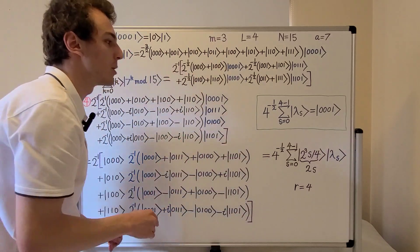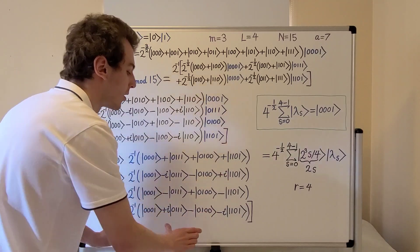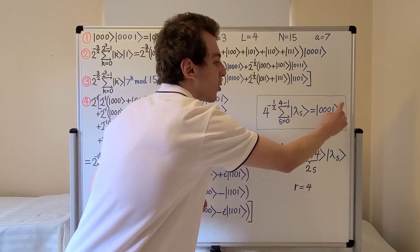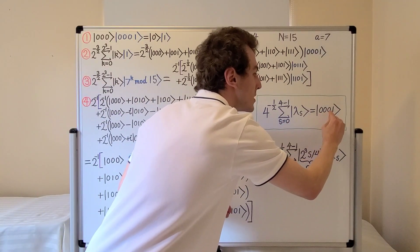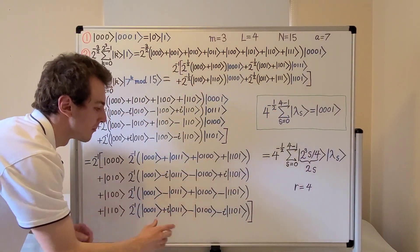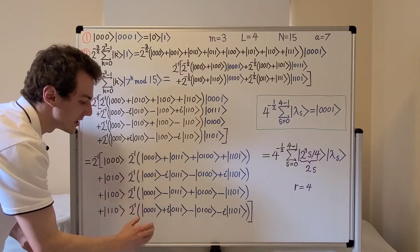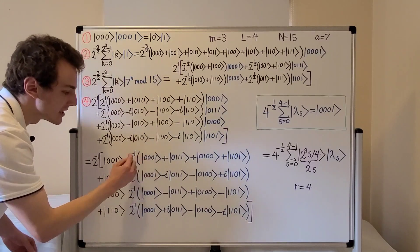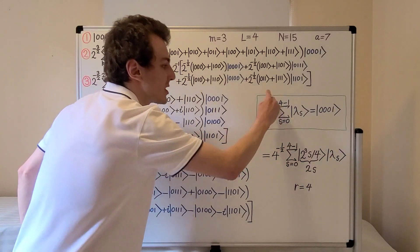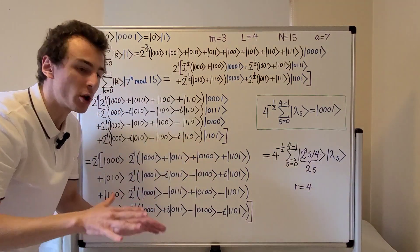One final observation: if we take the sum of all four of these eigenstates, we find that up to a normalization coefficient, we get the state ket one, or in full, zero zero zero one. Adding all of these terms together gives a coefficient of four, which multiplies the two to the minus one, and that gives us the normalization coefficient. All other terms cancel: the plus and minus terms cancel, the minus i and plus i terms cancel, so all of those terms disappear except for the ket one state.